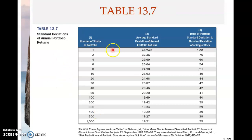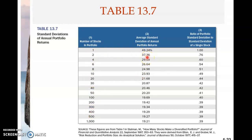This table shows that as you increase the number of stocks in your portfolio from 1 to 1,000, and plot the average standard deviation of annual portfolio returns, you find that if you take any stock in the market, the standard deviation of return on average will be about 50%. But as you increase the number of stocks in the portfolio, the average standard deviation of the portfolio becomes lower, until a certain point — after that, it doesn't go down very much.